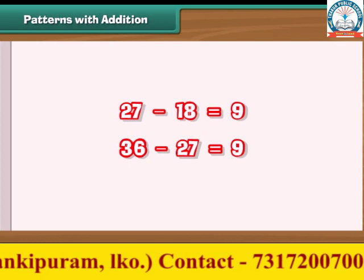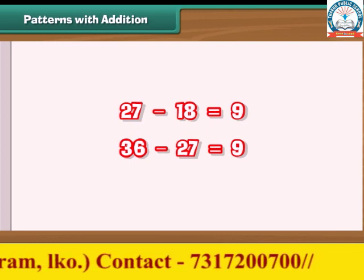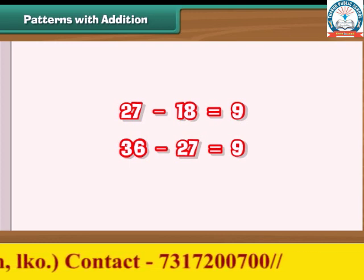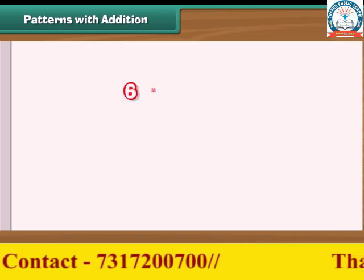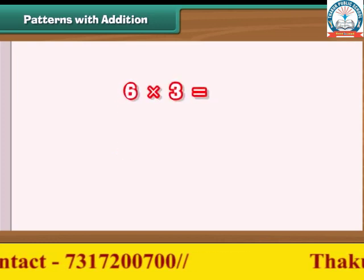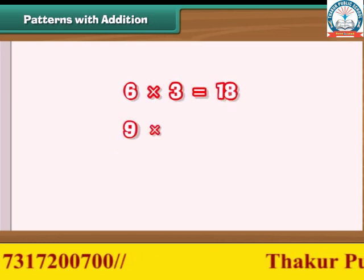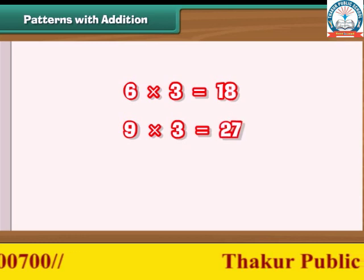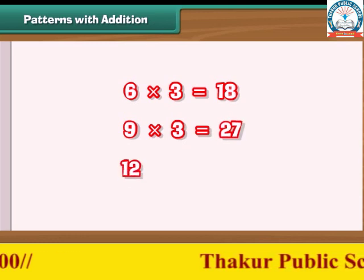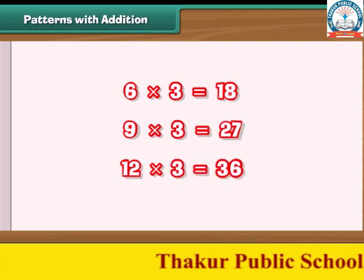There is another interesting fact: each sum is three times the middle term. 6 times 3 is equal to 18; 9 times 3 is equal to 27; 12 times 3 is equal to 36.